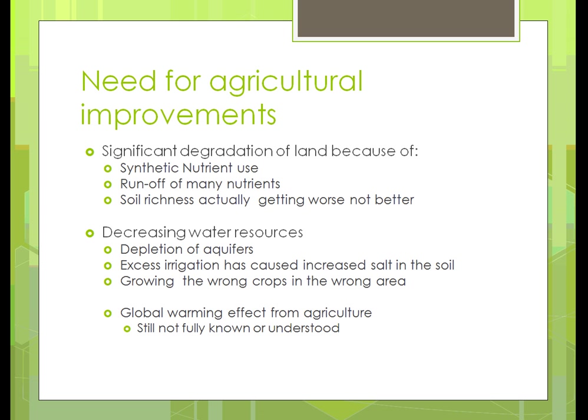Another issue is a decreasing amount of water available. Because we're using so much irrigation, we're actually depleting the aquifers we're drawing from, and we're not replenishing them at the rate we're taking water out. A lot of water comes from aquifers used for drinking water in many large cities, so we could have a serious problem. The excess irrigation is also leaving a lot of salt in the soil, and if soil becomes too saline, crops will not grow.